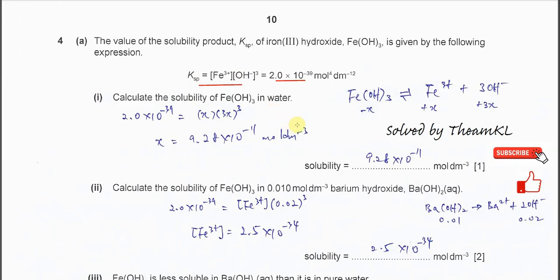It's better to construct this equation. Iron 3 hydroxide dissociates to form iron 3 and 3 moles of hydroxide. So when x moles of iron 3 hydroxide dissociate, it will form x moles of iron 3 ions and 3x moles of hydroxide. Therefore you need to substitute the x value — the amount of hydroxide that dissociates in a certain volume — into the Ksp expression.